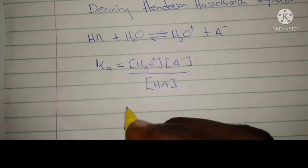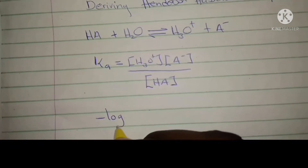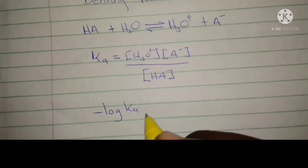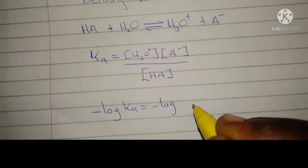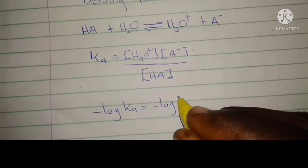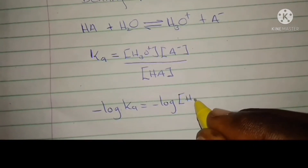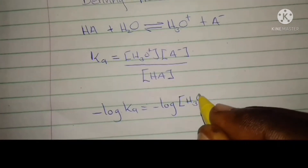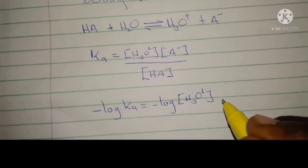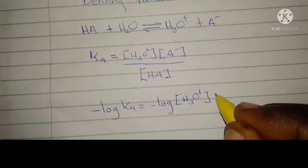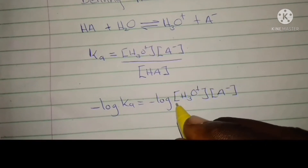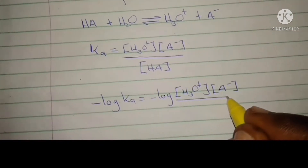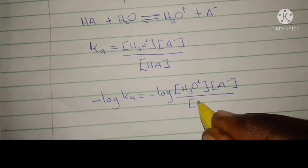Then we introduce the negative log on both sides. We have the negative log of Ka equal to the negative log of the concentration of the hydroxonium ion multiplied by the concentration of the conjugate base divided by the concentration of the acid.